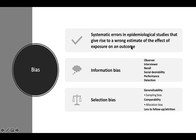Right now, there are over 50 different types of biases. But I'll be talking about a couple of them in two categories: information bias and selection bias.